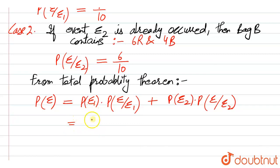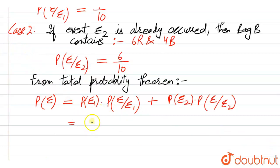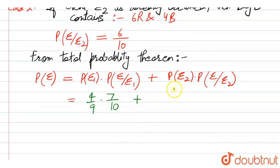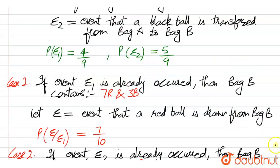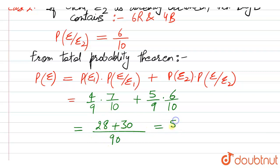This becomes: probability of E1 is 4 by 9, multiplied by 7 by 10 — that is probability of E given E1 — plus probability of E2 which is 5 by 9, multiplied by 6 by 10. So this becomes: 7 times 4 is 28, 6 times 5 is 30, so 28 plus 30 divided by 90, which is 58 divided by 90, which can be written as 29 by 45. This is the final probability.